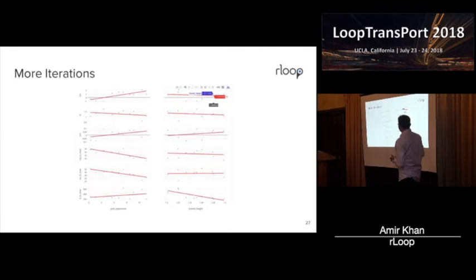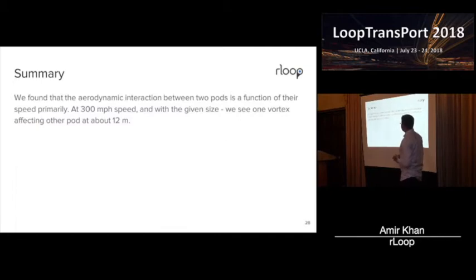And we performed a lot of iterations on this design. We selected a certain size of the pod, the tube, speed, temperature, and we analyzed it to see what actually we will be seeing. So in summary, what we found is that the size of if we have two rPod size and they're going 300 miles an hour, the interaction between one pod and another starts to become very critical when they're like 12 meters apart. But we have to scale this study to further investigate it. But that's what we found.